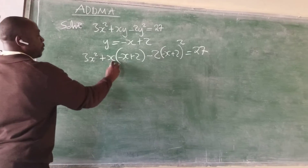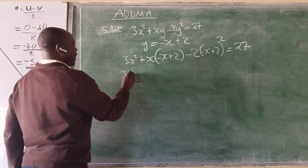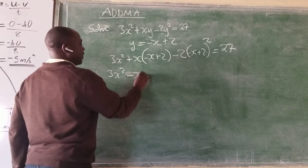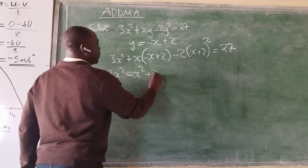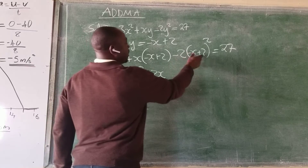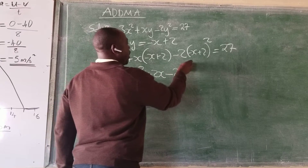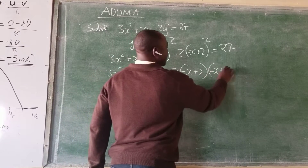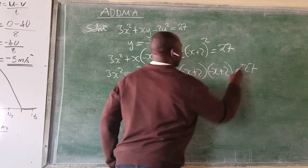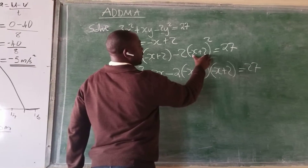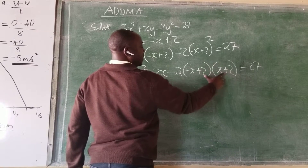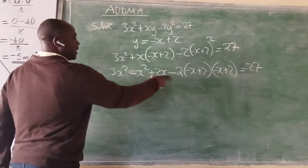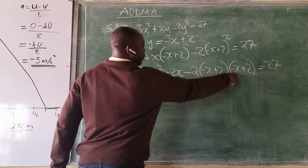So we expand here. We have 3x squared, plus x times negative x which gives us negative x squared, and x times 2 gives us plus 2x. Then we need to expand the squared term: we have 2 open bracket negative x plus 2, open bracket again negative x plus 2, and this equals 27. Since negative x plus 2 has been squared, we expand it by writing it out twice.